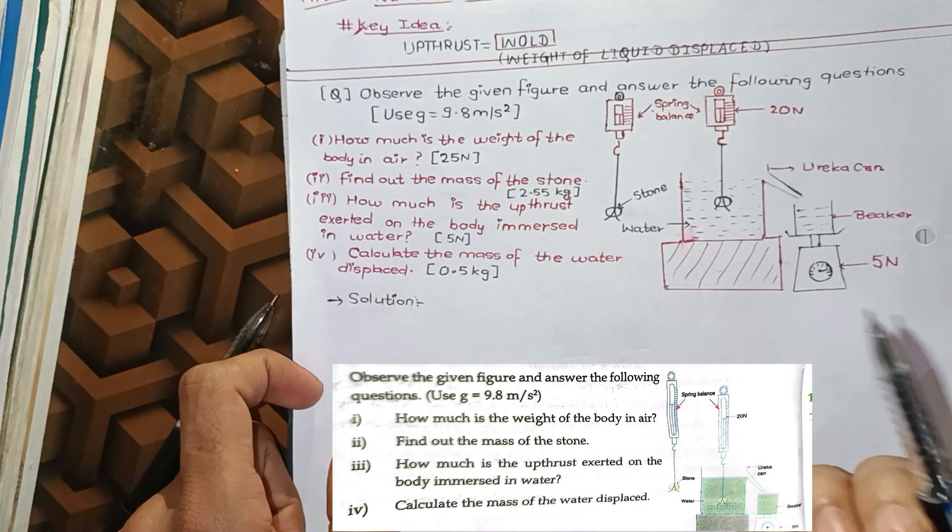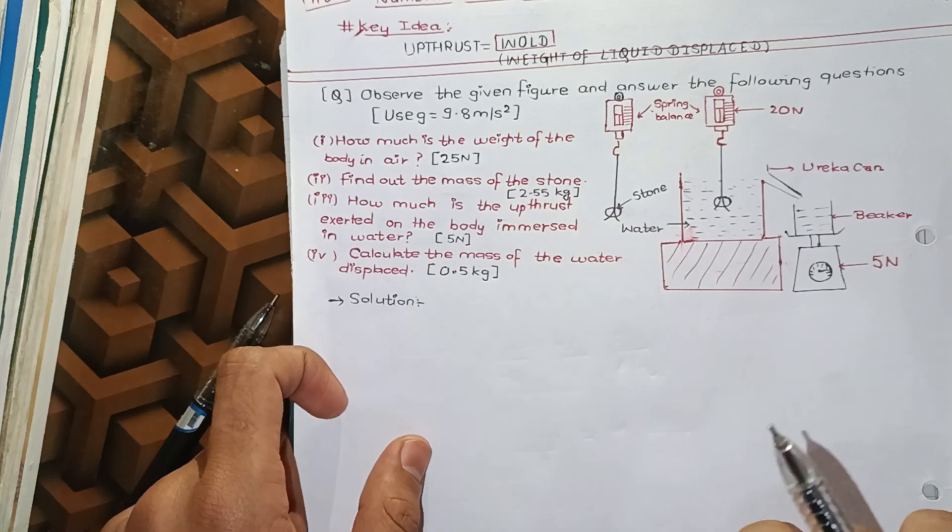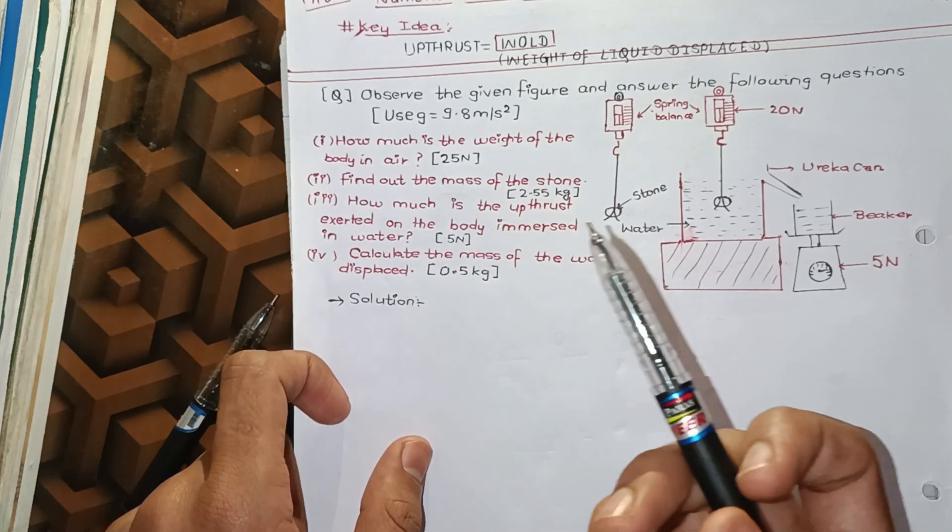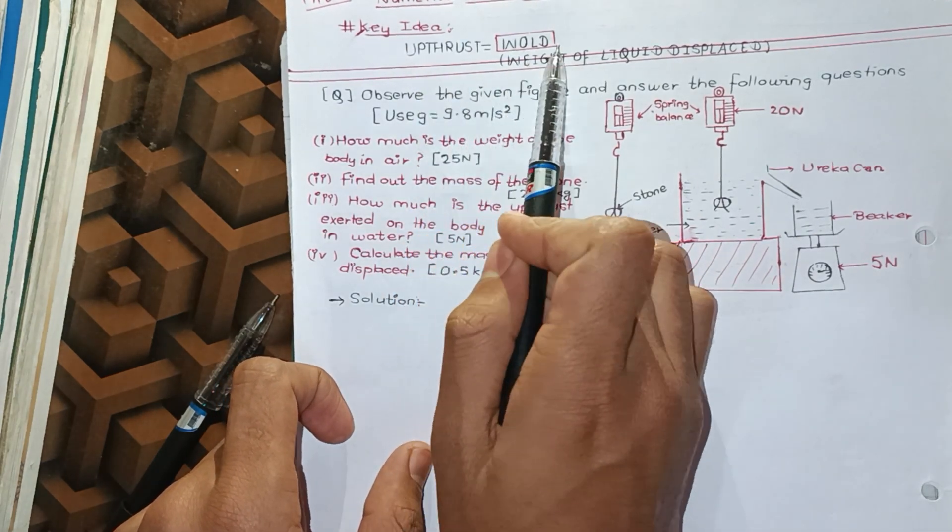Okay, next question is very important, a 3-mark question. This question is about Archimedes principle. The key idea is upthrust equals the weight of liquid displaced.